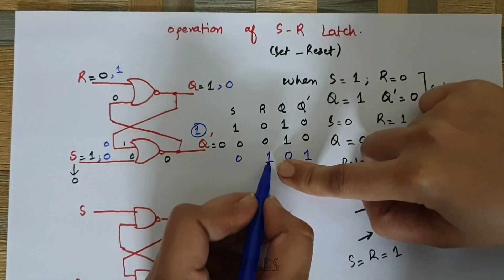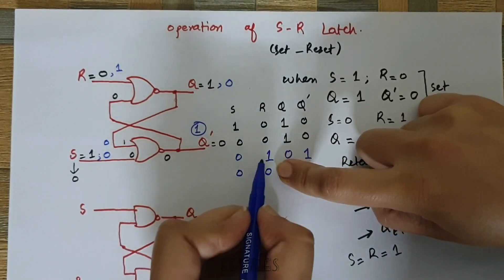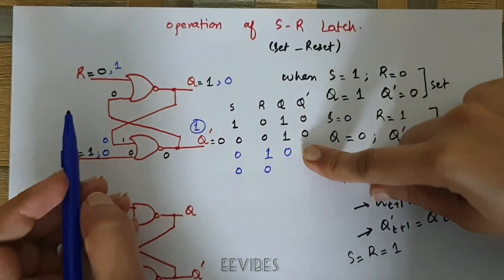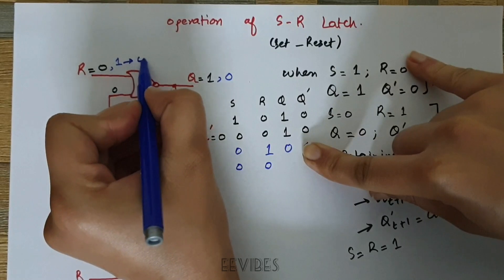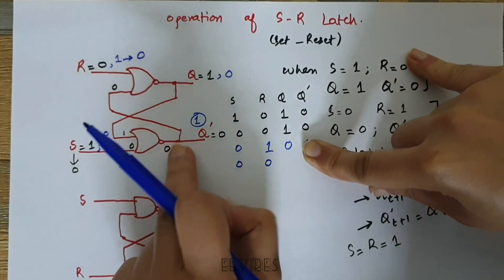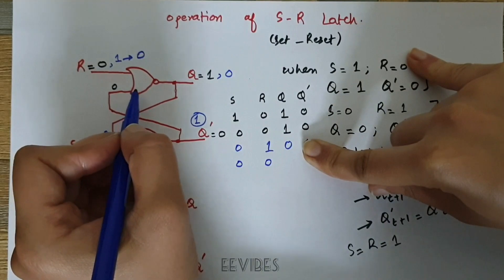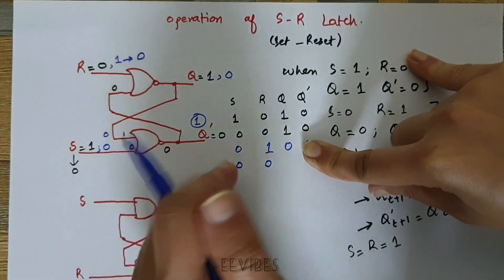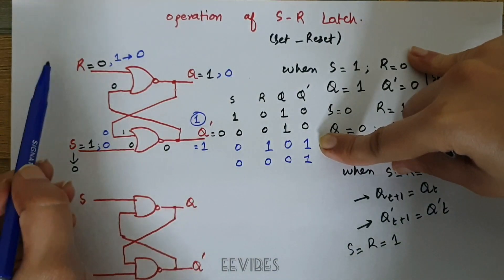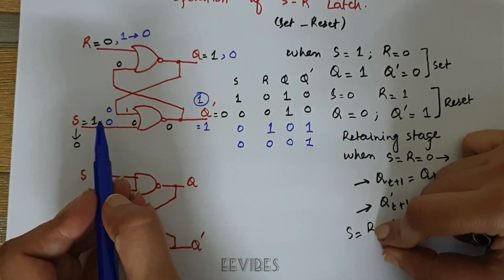Next, we change the combination from 0,1 back to 0,0, so this state should retain its previous value. R changes its value from 1 to 0 while S remains 0. Since the output Q-bar is equal to 1, when this value is fed in, 1 NOR 0 produces output equal to 0, and 0 NOR 0 produces output equal to 1 again. In this way the latch retains its value — and that is how the SR latch using the NOR gate works.